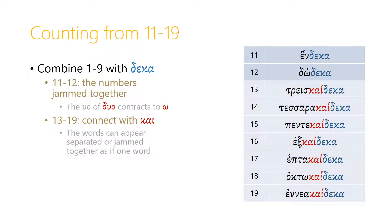To count from 11 to 19, we combine the numbers 1 to 9 with deca, 10. For 11 and 12, the numbers are jammed right together, so we have hendeca, and for 12, instead of duodeca, the epsilon and omicron contract together into one omega, so we get dodeca.